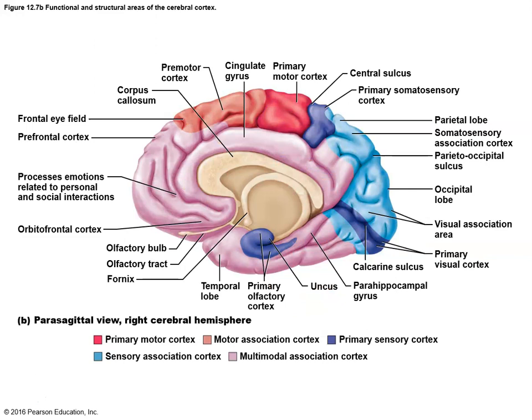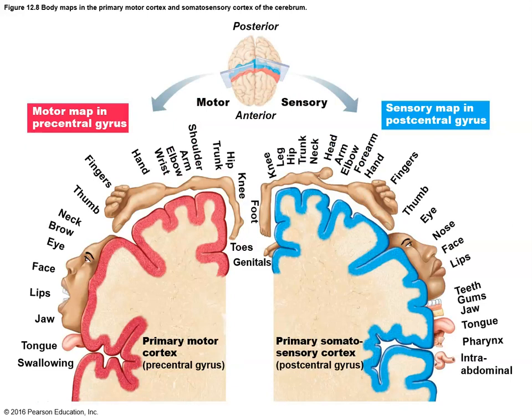Looking at the brain's motor and sensory areas, the primary motor cortex and primary somatosensory cortex are separated by the central sulcus — a deep groove dividing the movement component from the sensory component. The amount of cortical space devoted to each body part indicates how much motor or sensory processing that part requires.